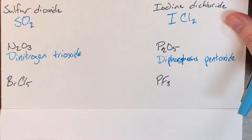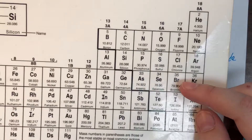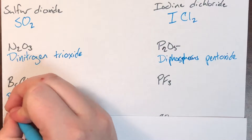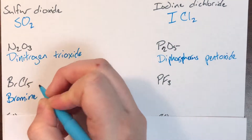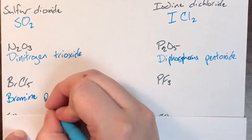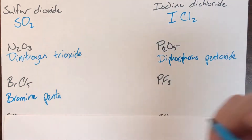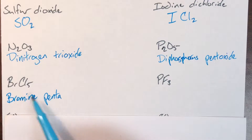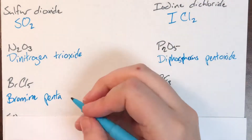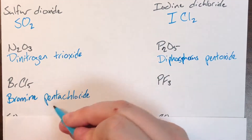Next is BrCl5. Br doesn't have a subscript, so no prefix — just bromine. The subscript for Cl is 5, so the prefix is penta. Cl is chlorine, whose compound name is chloride. Since chloride doesn't start with a vowel, we can keep the full prefix. So this is bromine pentachloride.